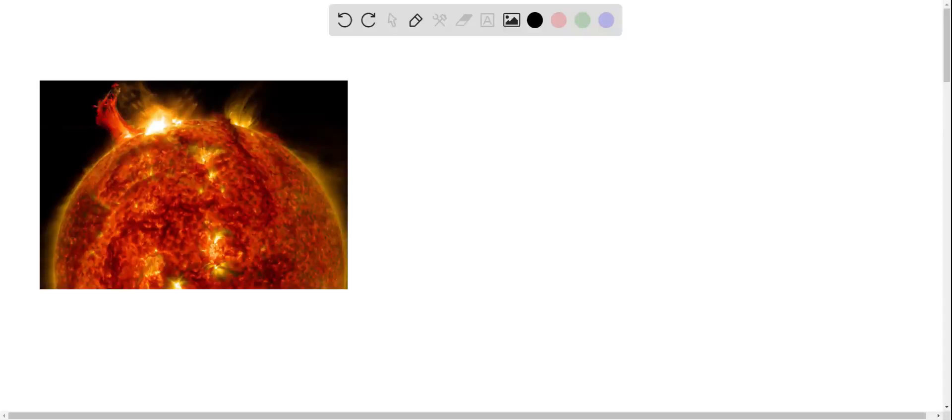Solar activity has its origins in magnetic fields that become twisted due to the differential rotation of the sun. Here we're going to do a short magnetic analysis of a solar flare.